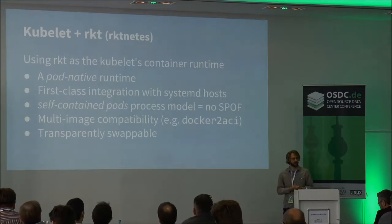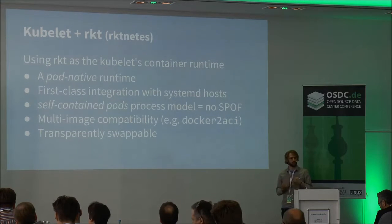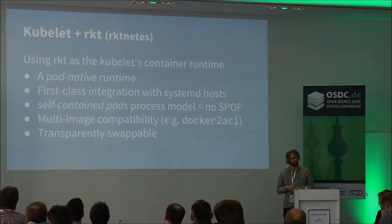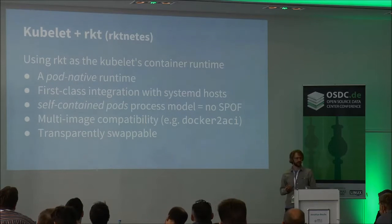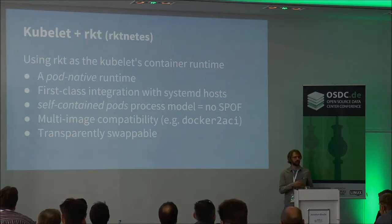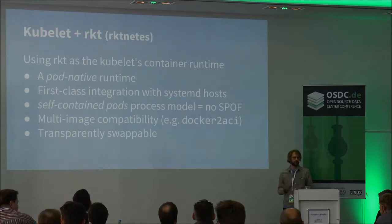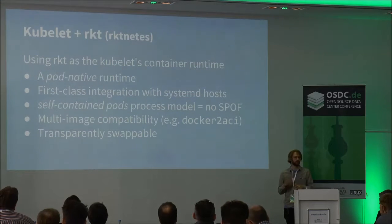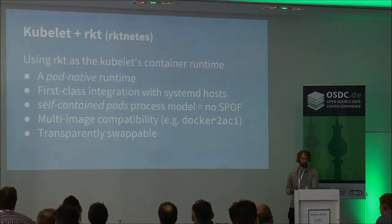Let's talk about what integration with Rocket looks like instead. Key motivations: since Rocket is a pod-native runtime that understands pods as a first-class thing, it provides benefits when integrating with the kubelet. Rocket's seamless integration with systemd means that as Kubernetes is deployed more and more on systemd distributions, you get first-class support there. With the self-contained execution model and no central daemon, there's no single point of failure. And a really important goal is that it's totally transparently swappable — as a Kubernetes or Docker user, you can continue using it as you would today, but underneath we can swap in Rocket. We do this using docker2aci, a project that pulls down Docker images and converts them to Rocket's internal format, so Rocket has native support for Docker images.